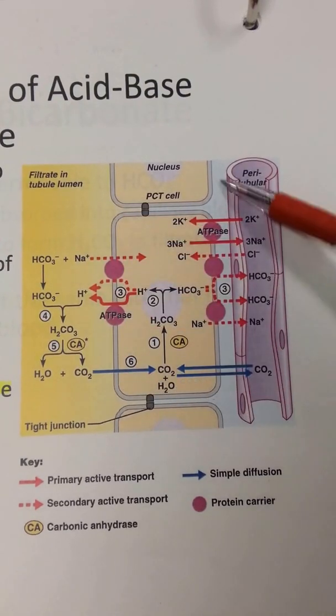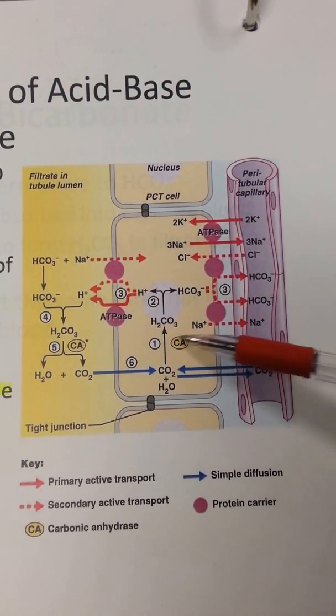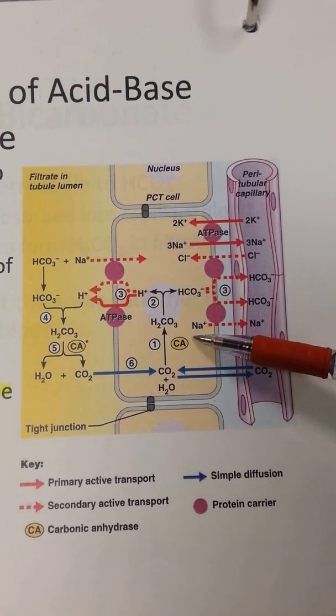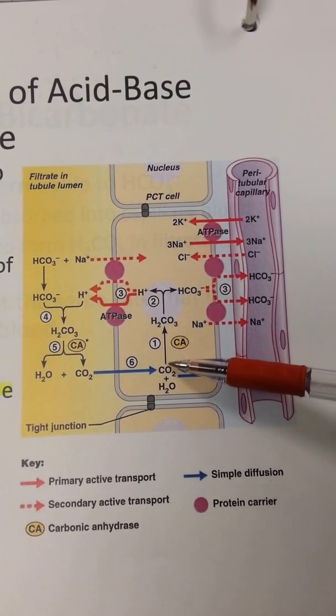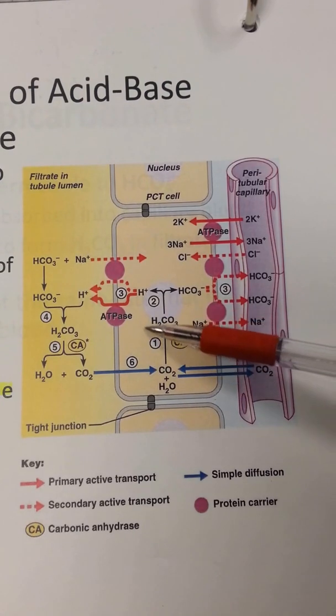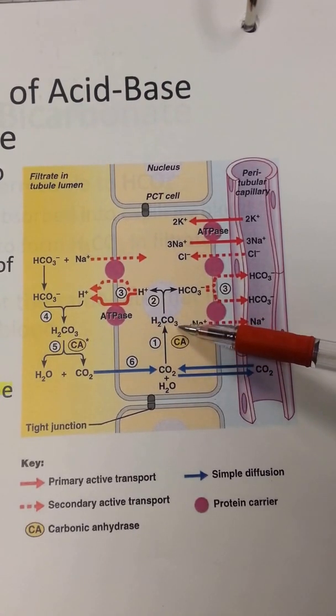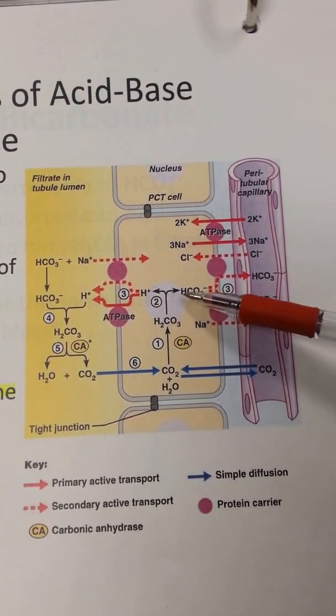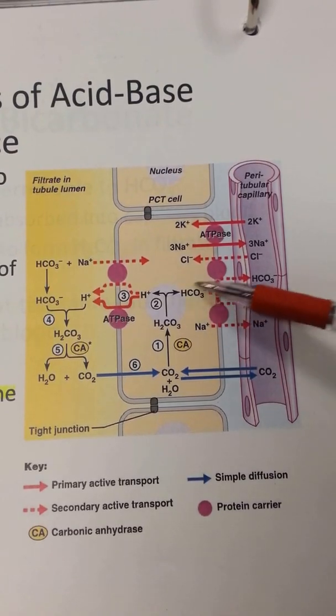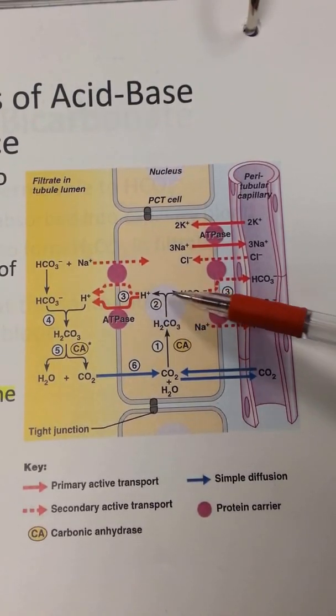As you can see in this diagram, CA here is carbonic anhydrase. We have H2CO3, which is carbonic acid. That breaks down into bicarbonate and hydrogen.